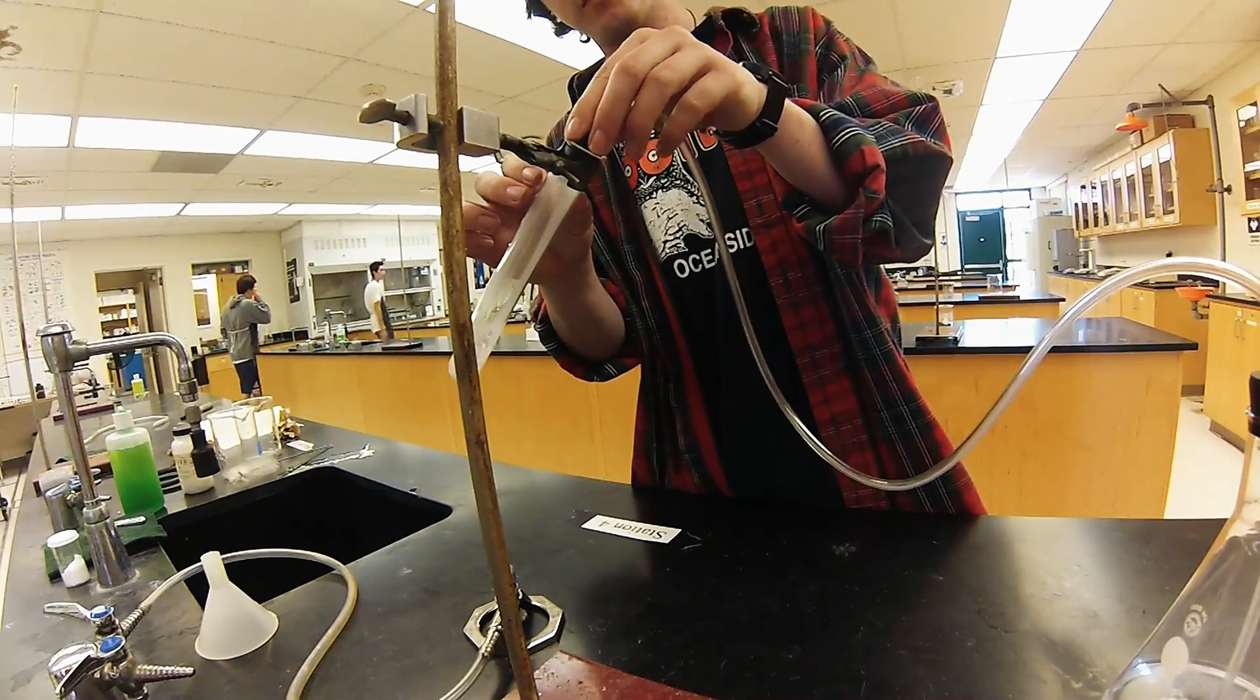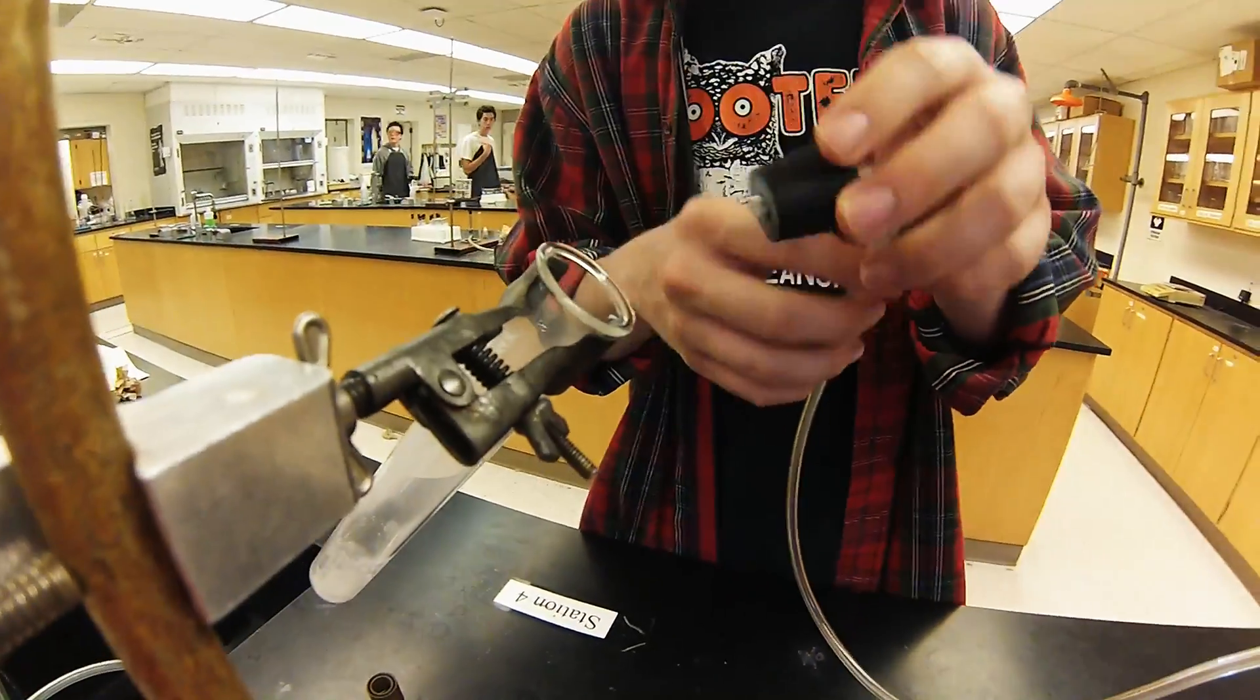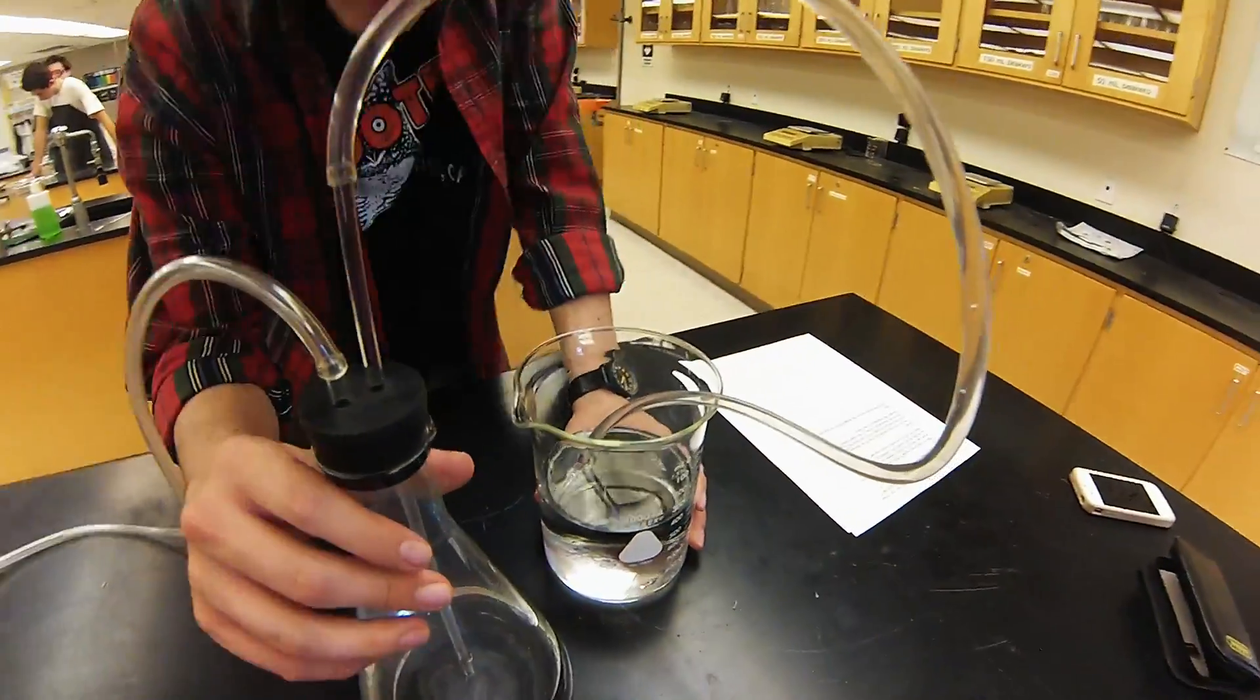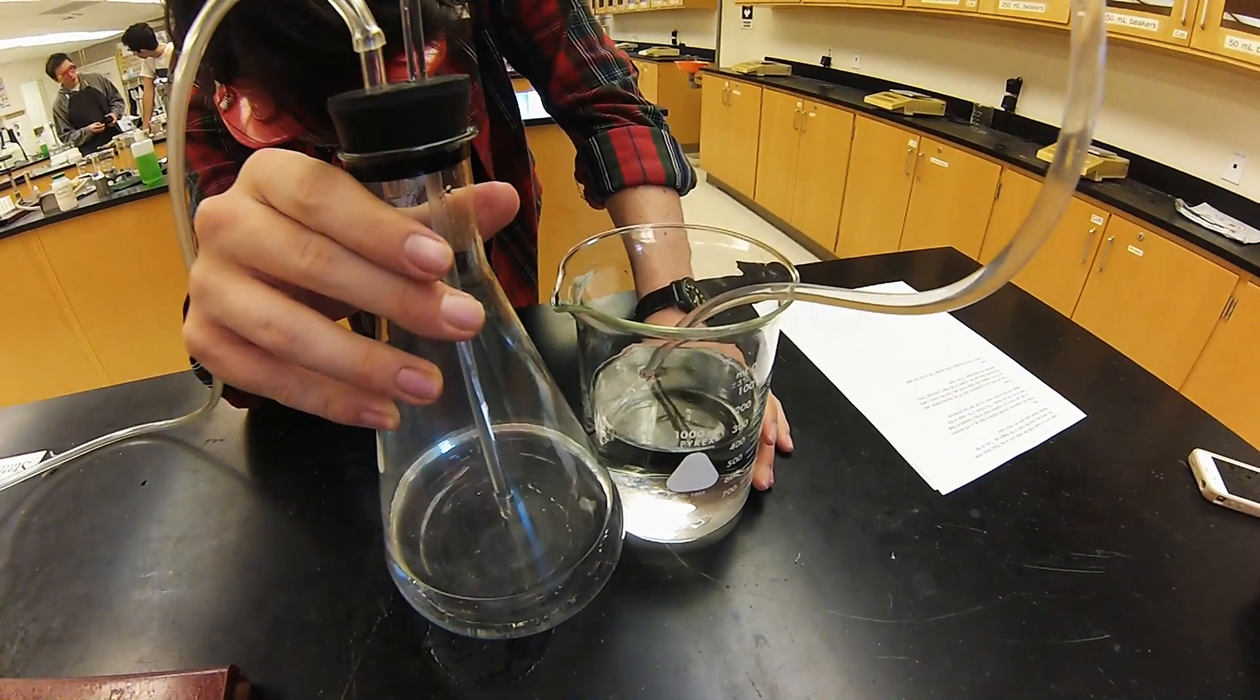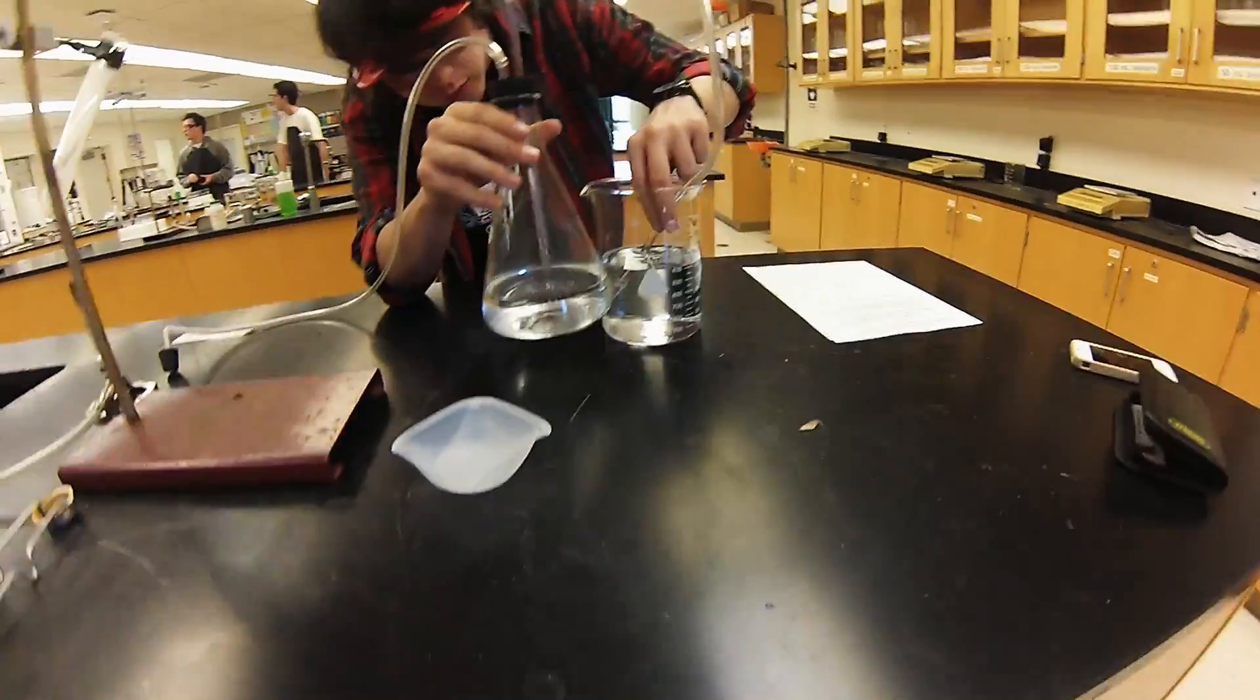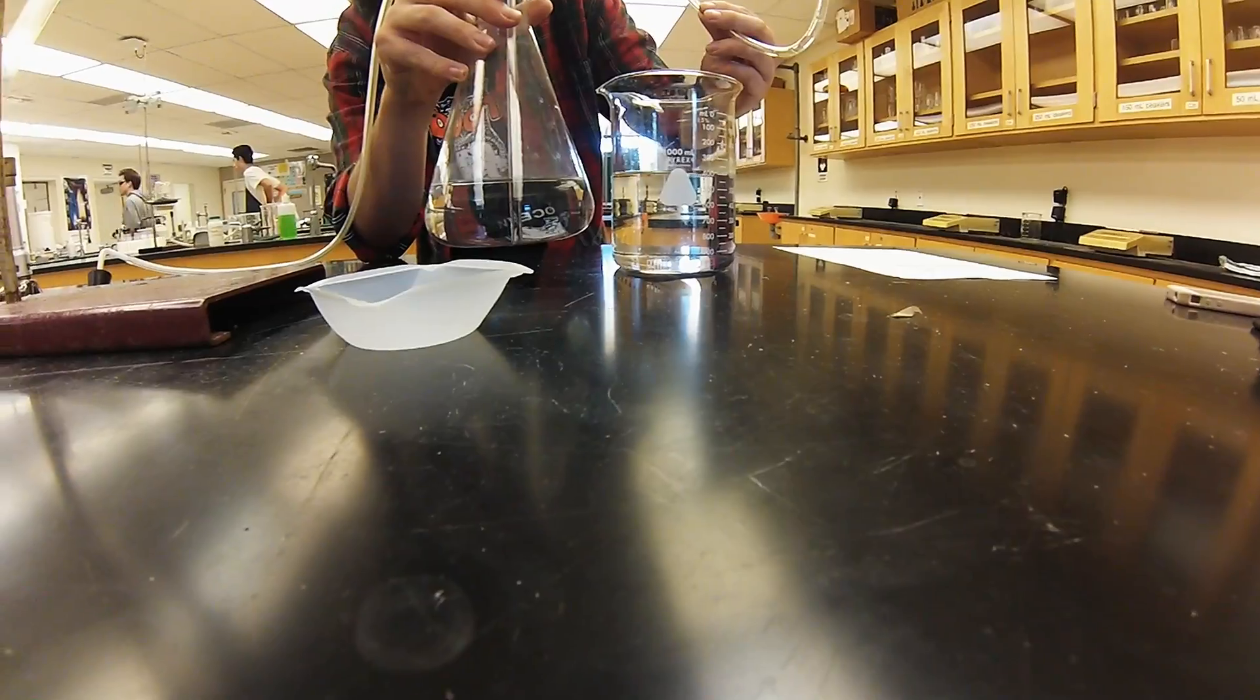Then holding the water levels in the Erlenmeyer flask and the beaker equal, and then removing the tube from the beaker.